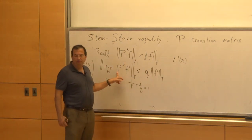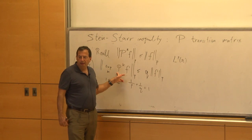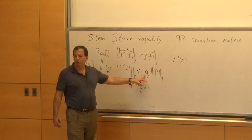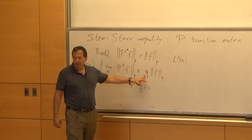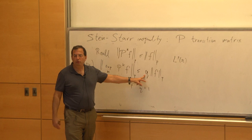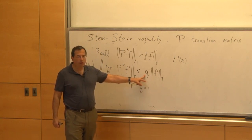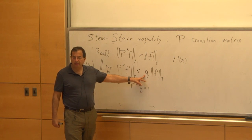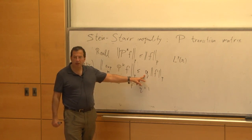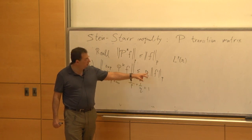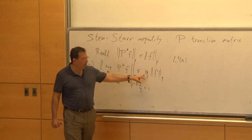It was proved by Stein in 1961, not with this constant but with a worse constant. It's a very clever proof — the paper is just two pages — combining the Hopf maximal ergodic theorem with the spectral theorem and some clever calculations. He got an inequality like this with a worse dependence on p.